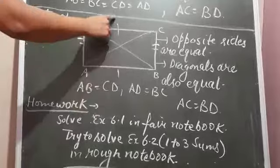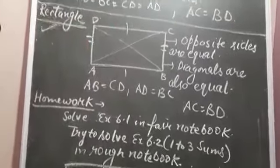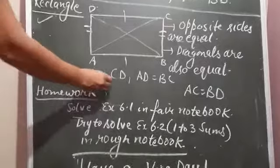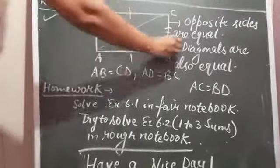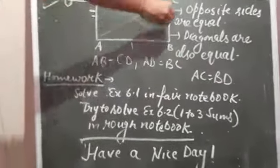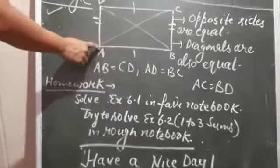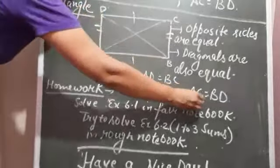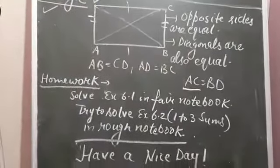The property of a rectangle is that opposite sides are equal: AB equals CD, and AD equals BC. The diagonals AC and BD are also equal. These are the properties of a rectangle.